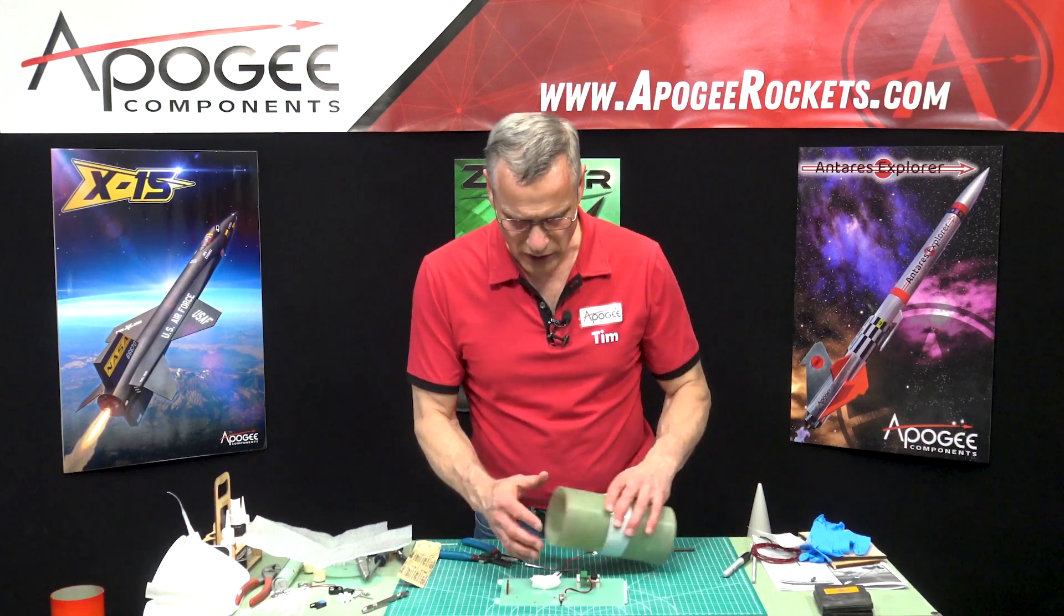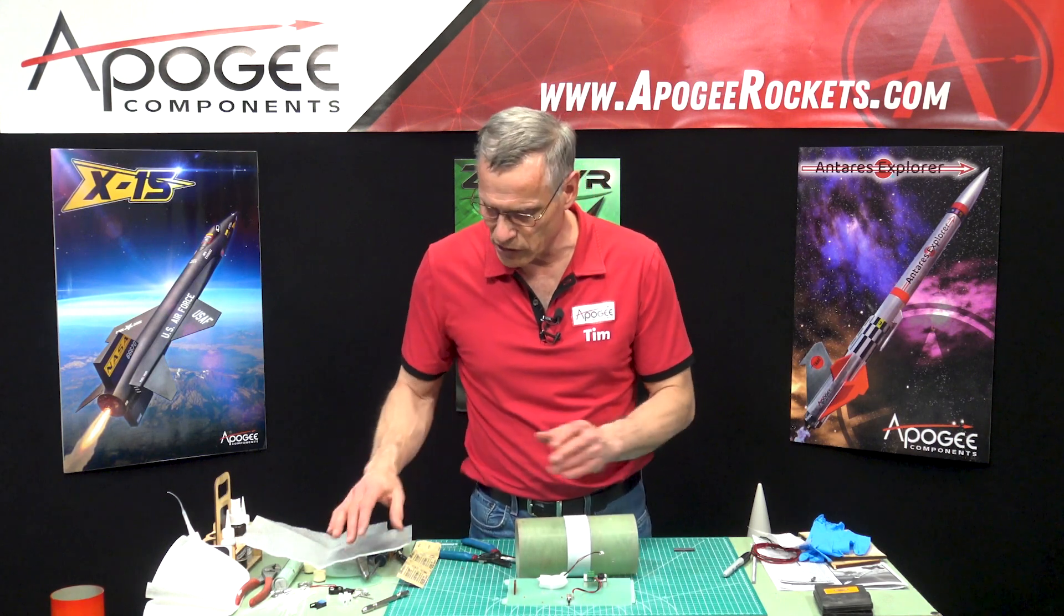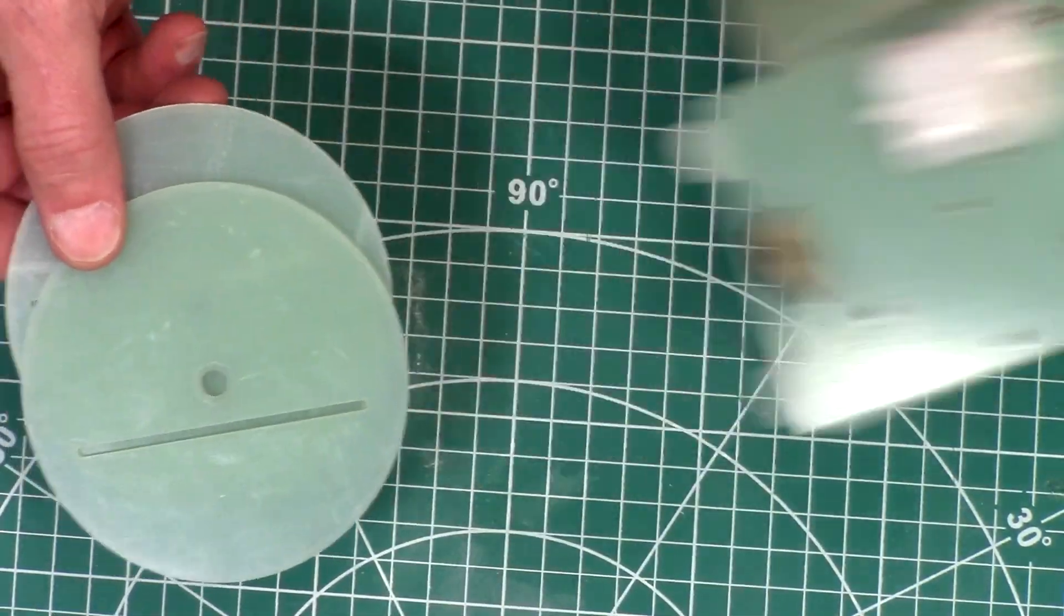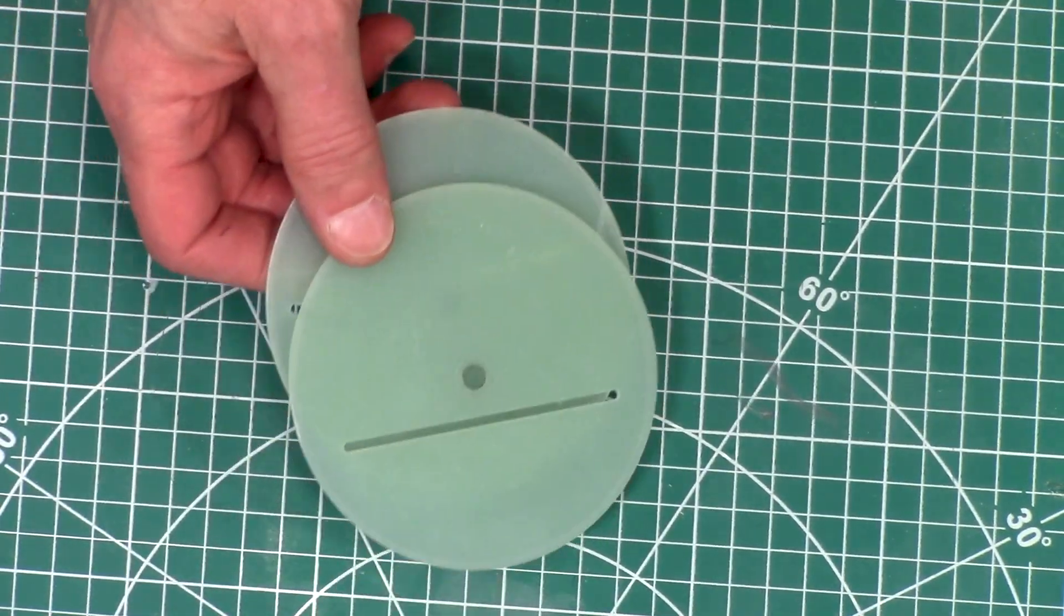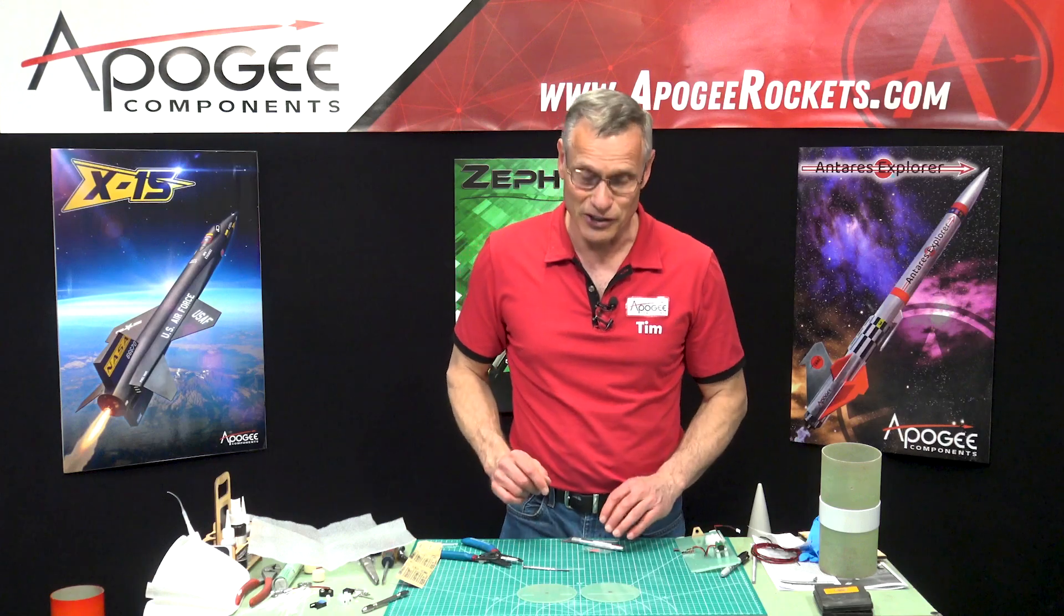Next, we need to run wires to the ejection charges, and I think I'll start that in the next video because we need to drill some more holes into these bulkheads. So I'll start that in the next video.